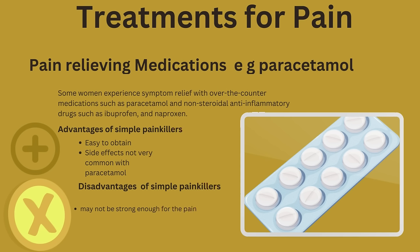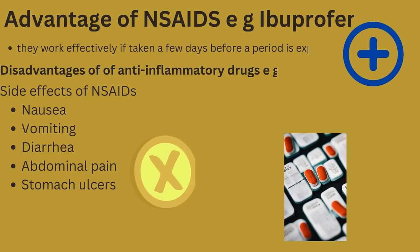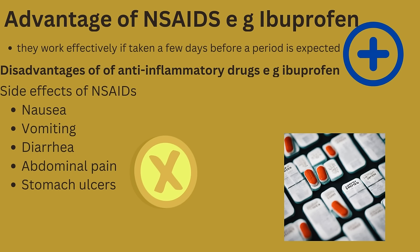Pain-relieving medications: Paracetamol can be used, and some women experience symptom relief with over-the-counter medications such as paracetamol and non-steroidal anti-inflammatory drugs (NSAIDs) such as ibuprofen and naproxen. Advantages of simple painkillers like paracetamol are that they are easy to obtain and side effects are not very common. The disadvantage is that they may not be strong enough for the pain. NSAIDs are another type that can be obtained over the counter; they work most effectively if taken a few days before a period is expected — about one to two days before the onset of menstruation. Disadvantages of NSAIDs include nausea, vomiting, diarrhea, abdominal pain, and stomach ulcers.